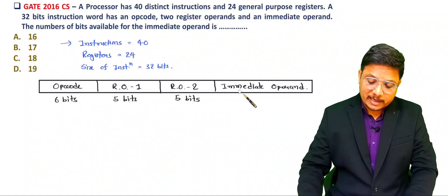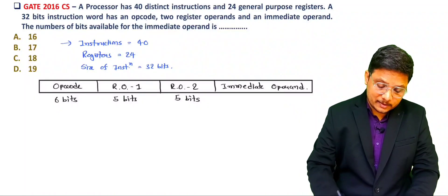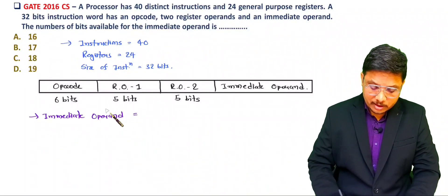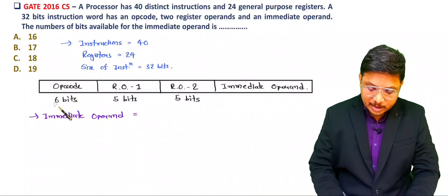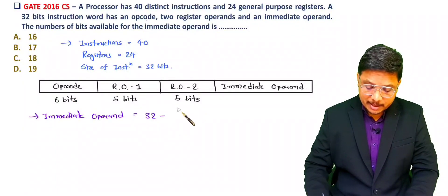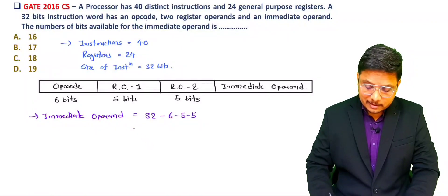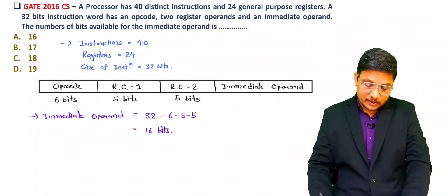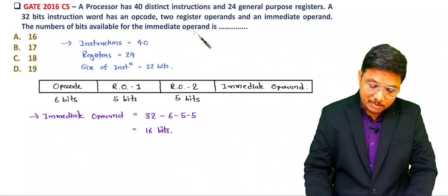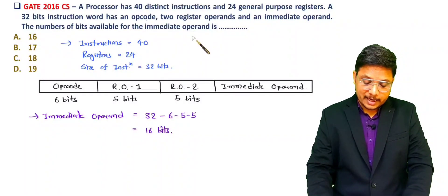So we can find the immediate operand size. The immediate operand equals total size 32 minus 6 (opcode) minus 5 (register operand 1) minus 5 (register operand 2), which gives 16 bits. That is how we identify the size of the immediate operand.